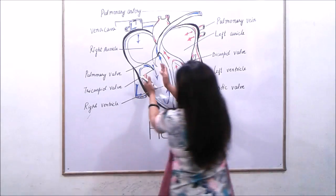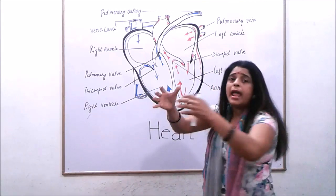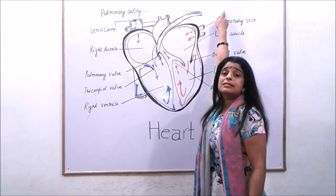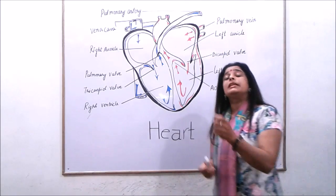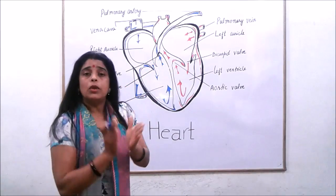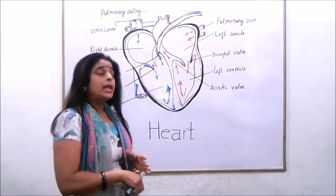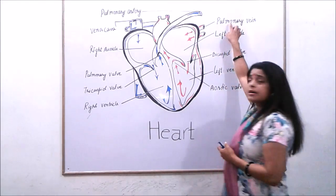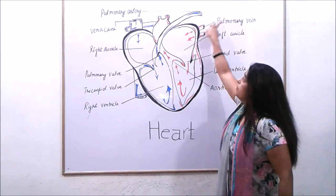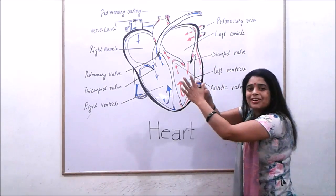Then the blood flows to the right ventricle. When the right ventricle is filled up, it contracts and the blood flows through the pulmonary valve to the lungs. In the lungs, the blood gets oxygenated — the carbon dioxide it was carrying is exchanged with oxygen. Then the pulmonary vein carries the oxygenated blood from the lungs to the left auricle, where it will be filled.